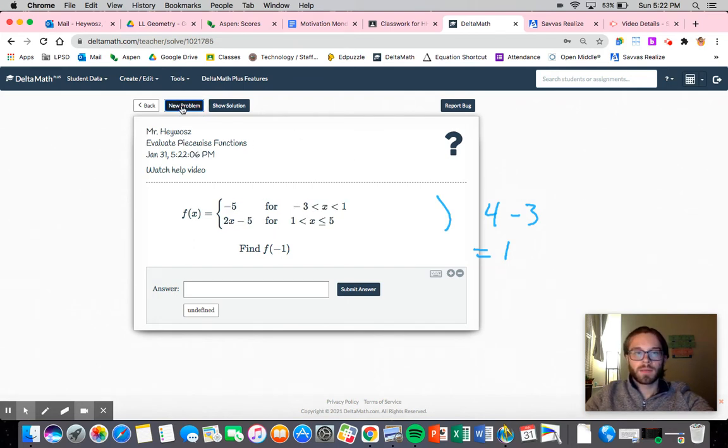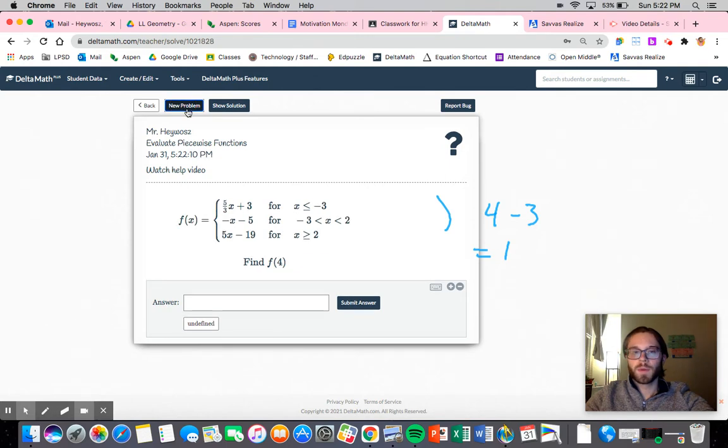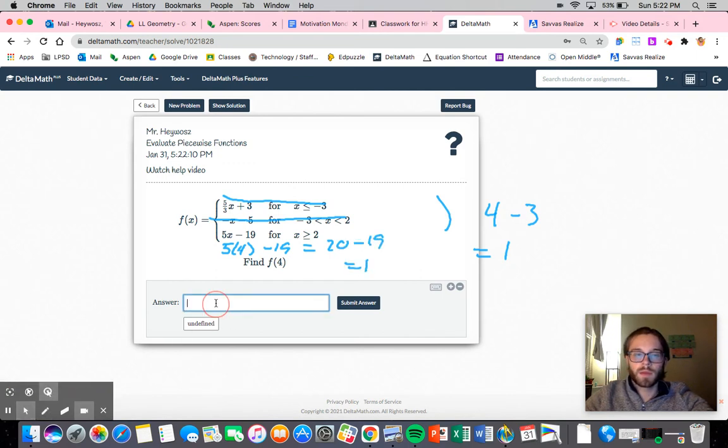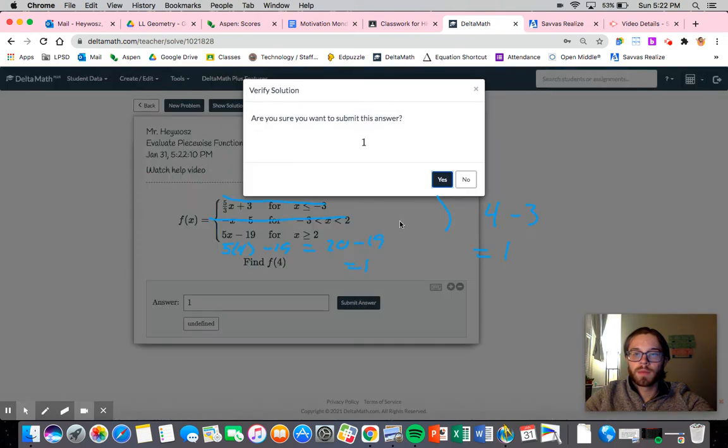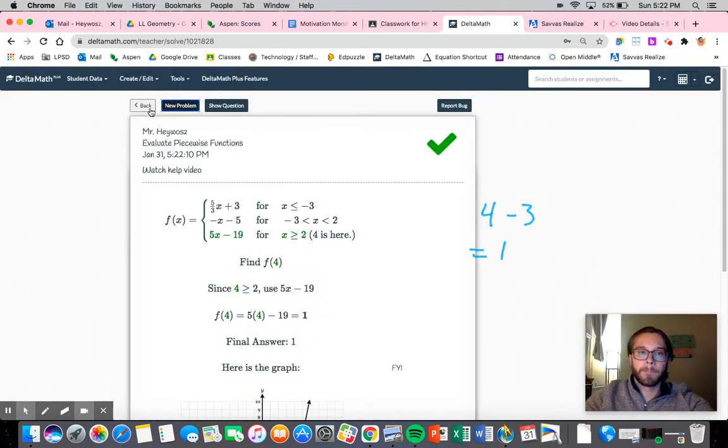Okay. So let's look at this one. So when I'm looking at this, I want four and I need to figure out which of these it applies to. Well, this is less than negative three. So that's not that. Negative three to two, not that. Greater than two. All right. So I would plug it in here. Five times four minus 19 is equal to 20 minus 19, which is equal to one. We'll submit.